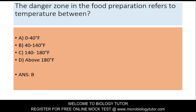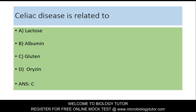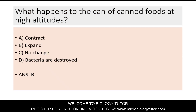The food danger zone temperature range is 40 to 140 degrees Fahrenheit. Remember this for your exams. In celiac disease, which substance is related? A. Lactose, B. Albumin, C. Gluten, D. Horizon. Answer is C: Gluten.